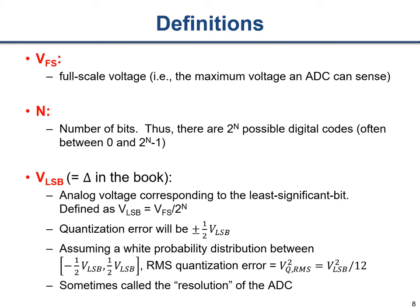Let's go over a few definitions before we get into the design of analog to digital converters. The first is V_FS, or the full-scale voltage. Sometimes this is called V_ref - people in the literature are fairly loose with their nomenclature. What this means is the maximum voltage an ADC senses. Any voltage above V_full_scale at the ADC input will basically just clip with no more bits after that.